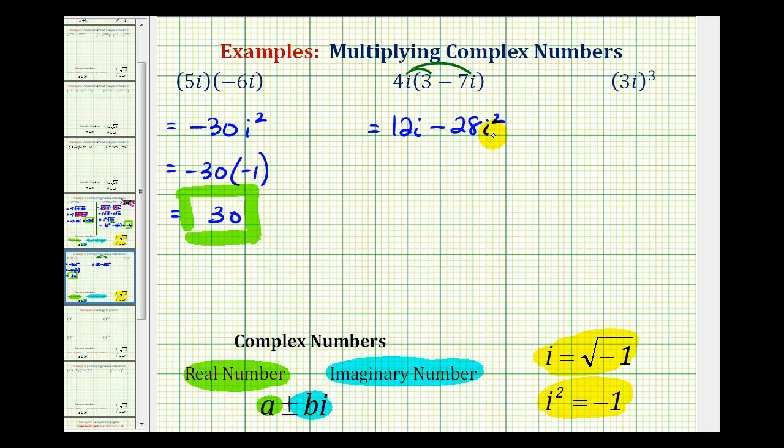Again, this is our product, but it's not in the correct form, or the form of a complex number. We can't have i squared in our final product, but because i squared is equal to negative 1, we'll perform a substitution for i squared. We would have 12i minus 28 times negative 1.